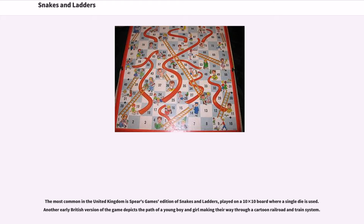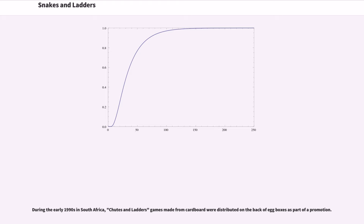The most common edition in the United Kingdom is Spears Games' edition of Snakes and Ladders, played on a 10x10 board where a single die is used. Another early British version of the game depicts the path of a young boy and girl making their way through a cartoon railroad and train system. During the early 1990s in South Africa, Chutes and Ladders games made from cardboard were distributed on the back of egg boxes as part of a promotion.